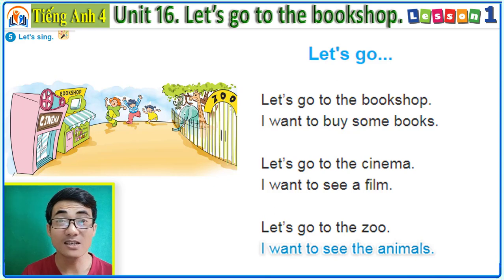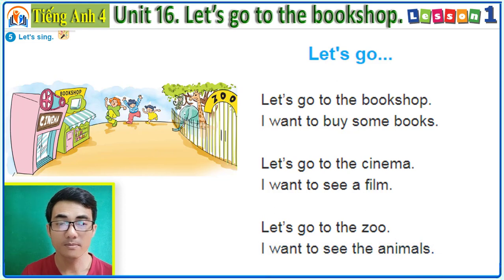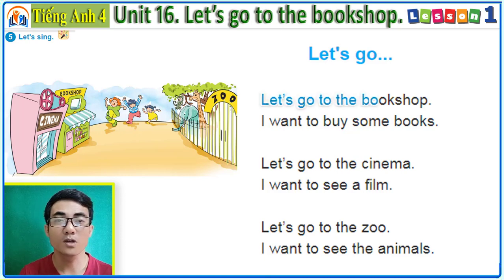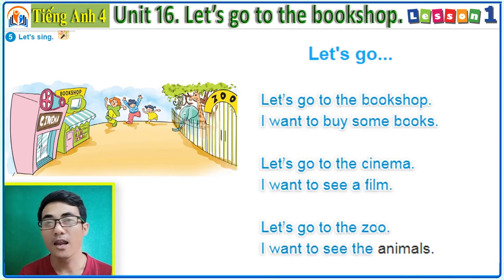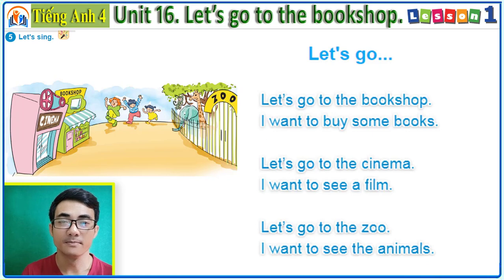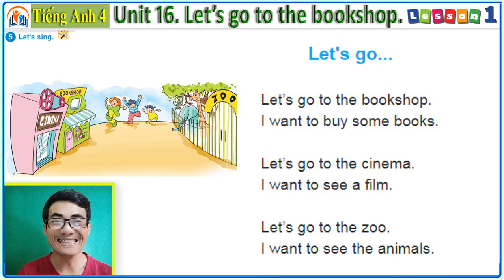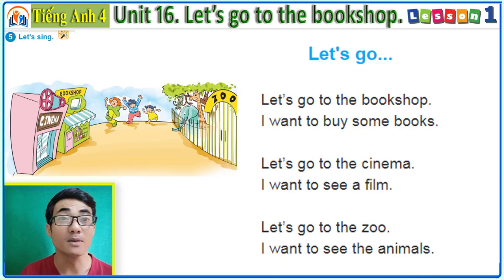Now listen to the song: 'Let's go to the bookshop. I want to buy some books. Let's go to the cinema. I want to see a film. Let's go to the zoo. I want to see the animals.' Unit 16, 'Let's go to the bookshop,' Lesson 1 is finished. Thank you for watching, bye bye and see you in Lesson 2!